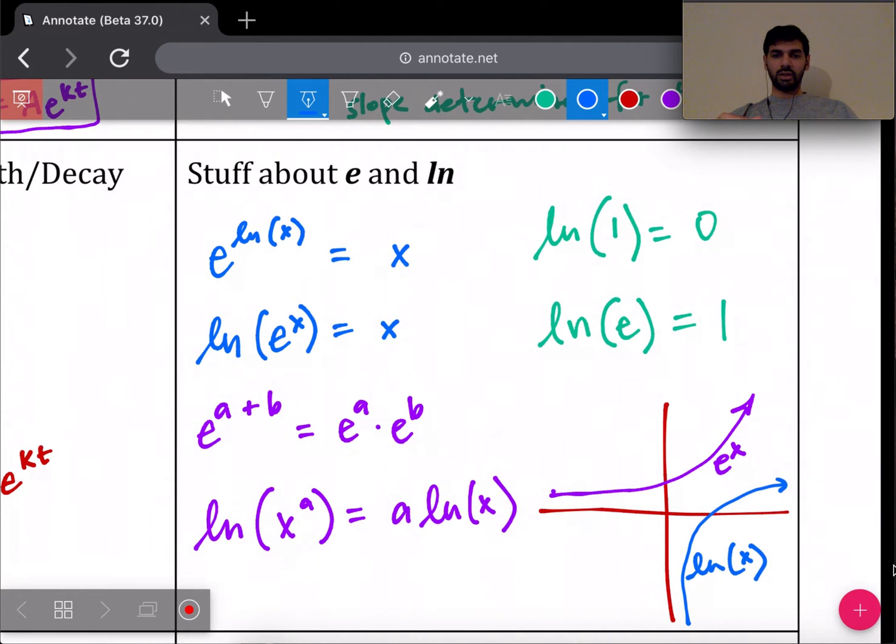So there's e and natural log. This coordinate right here is (0, 1), and this coordinate down here is (1, 0), just so you know where exactly that's intersecting the x and y-axis.